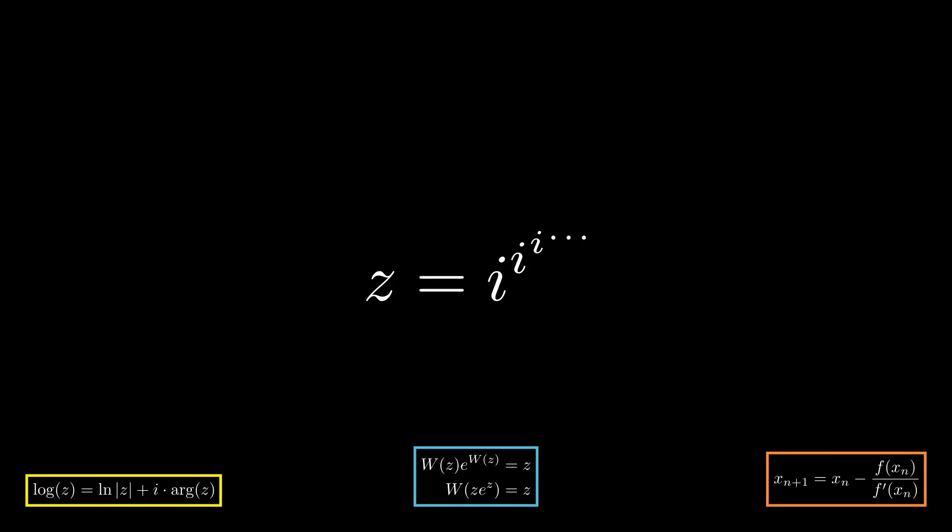Why does that work? Well, if you just looked at the exponent of i, it's our infinite power tower. i to the i to the i forever is what we called z. So our equation simplifies rather quickly as z equals i to the z.